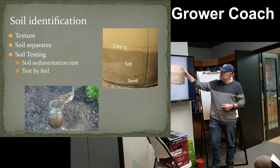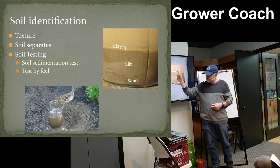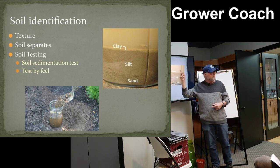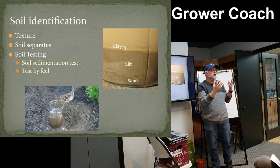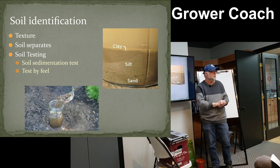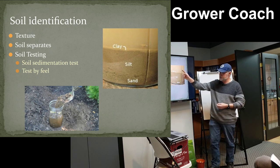If the water turns a dark or blackish colour, that's your organic matter — your beautiful compost and black humus. When the water turns a darker colour, you know you've got more organic matter in your soil.